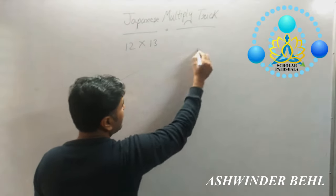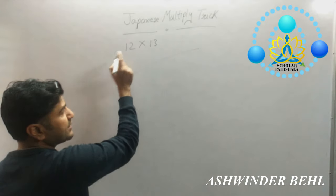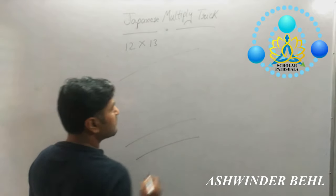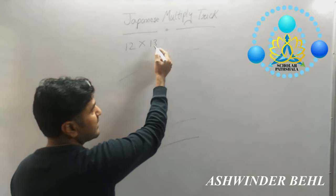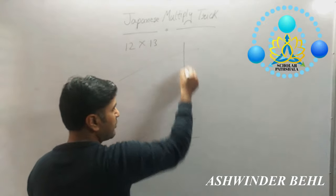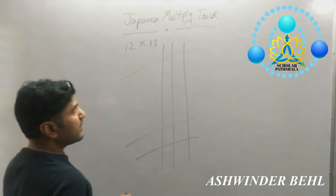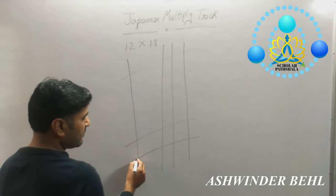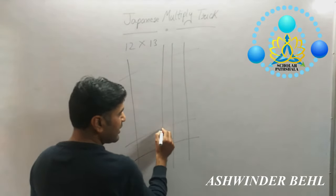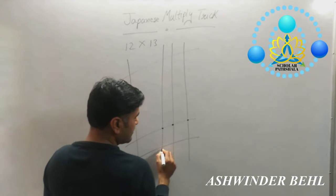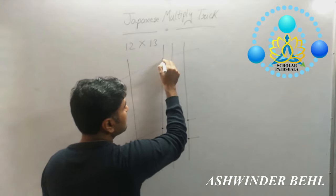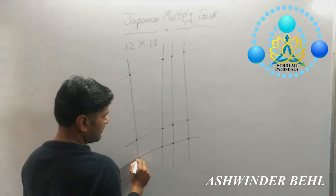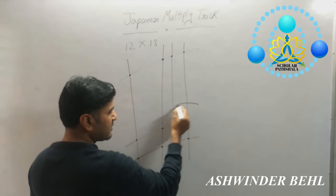First of all, you will draw one line because in this number, first digit is 1 and next digit is 2. So you will draw two lines this way. Now you will see the next number on the right hand side, that is 3. So you will draw three lines this way, and next digit is 1, so you will draw one line this way. Now you will make a point where two lines intersect and draw a semicircle this way.